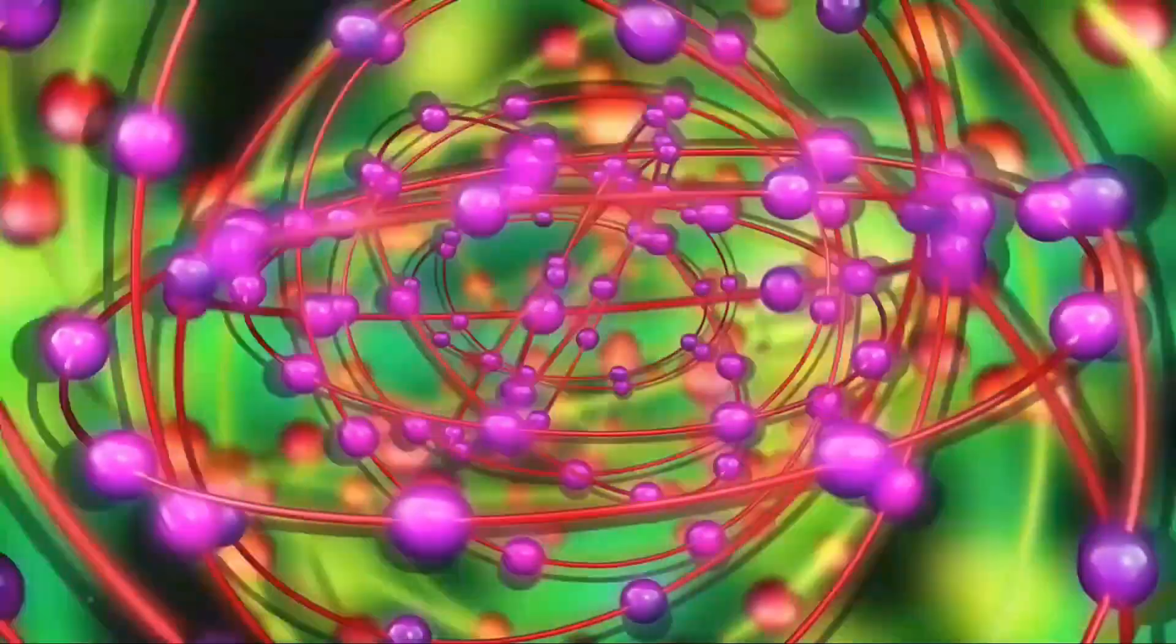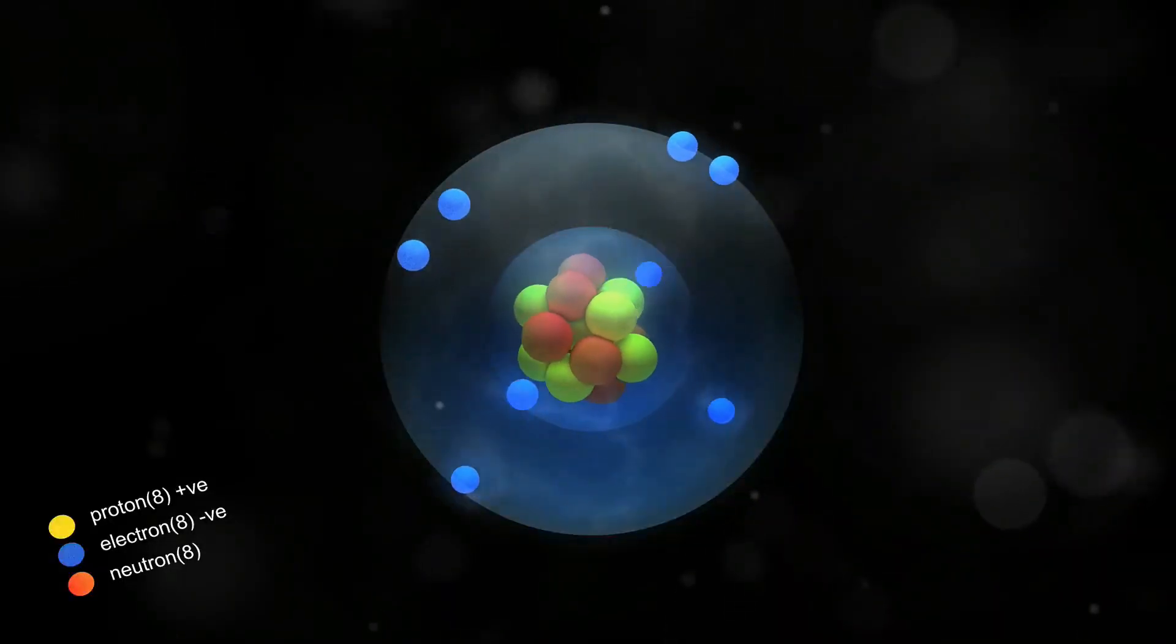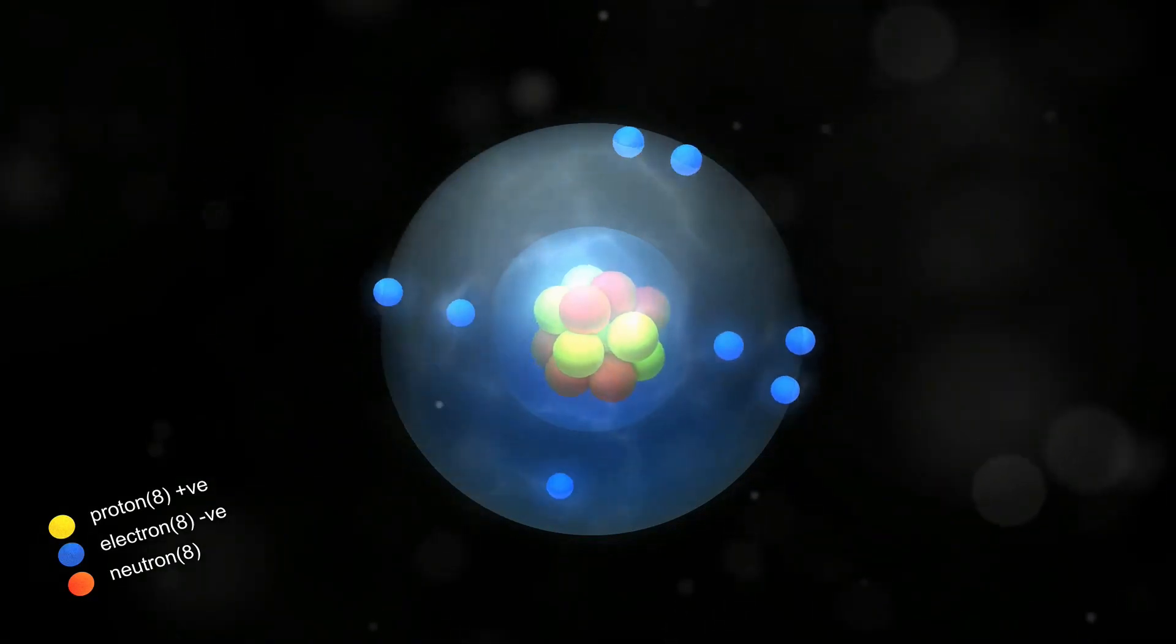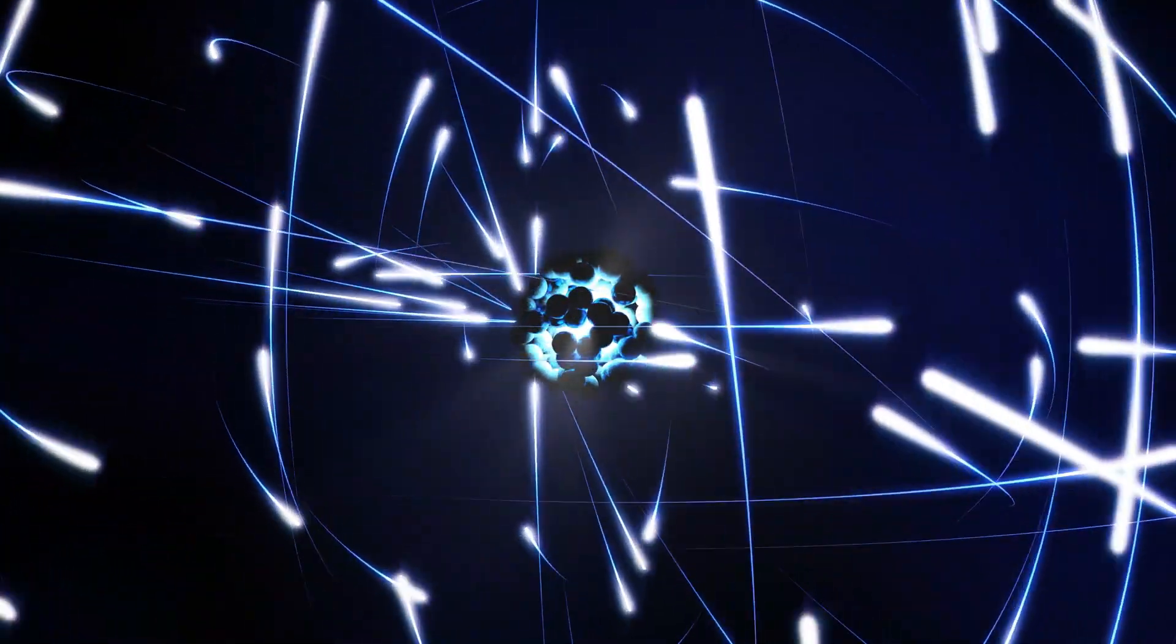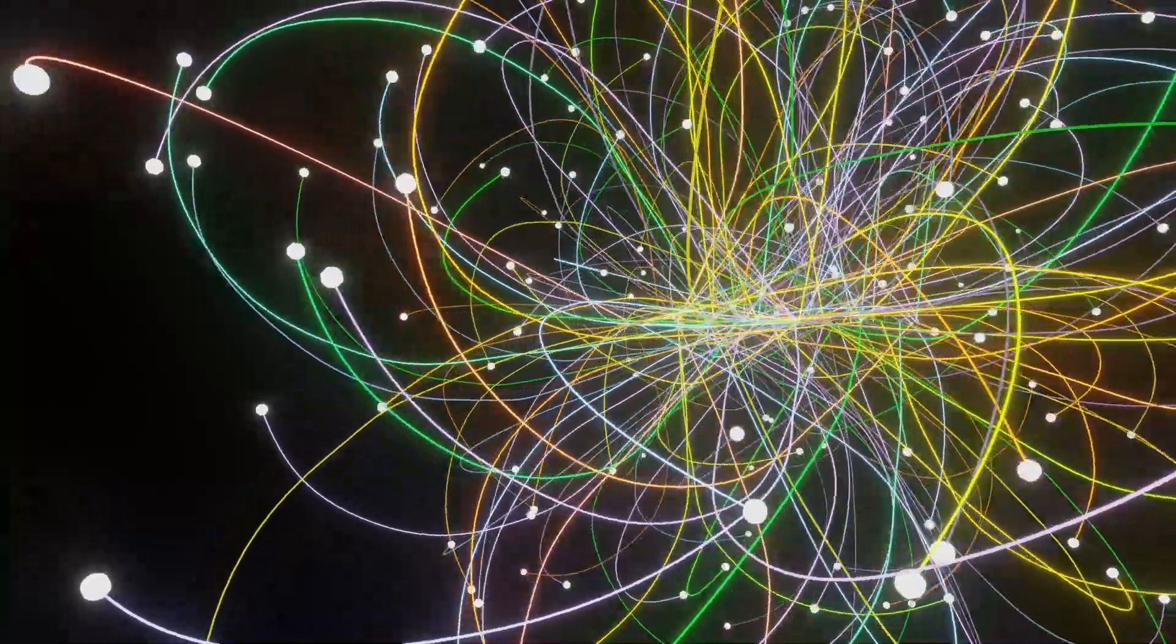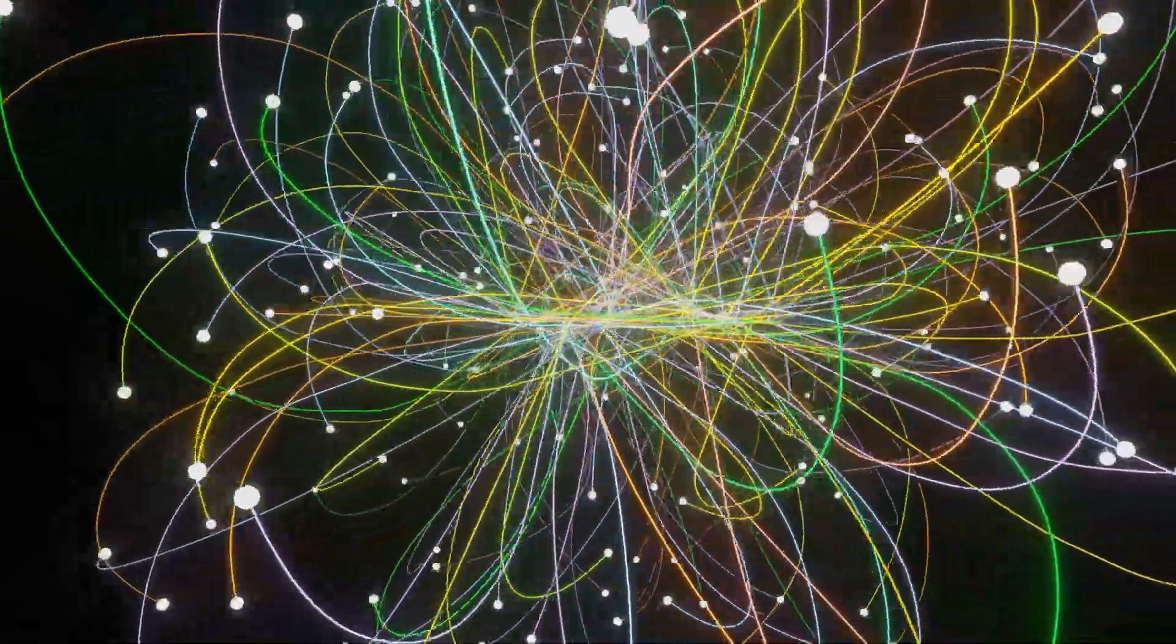Outside the nucleus, we enter the domain of electrons. These negatively charged particles are much lighter than protons and neutrons. They exist in a cloud-like region around the nucleus, constantly in motion. Imagine them as tiny race cars zipping around a track, never resting in one spot.